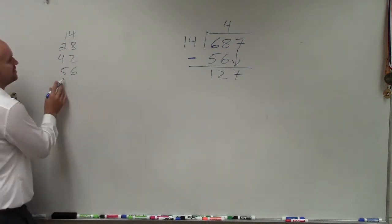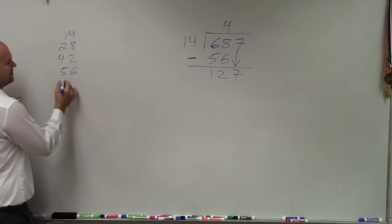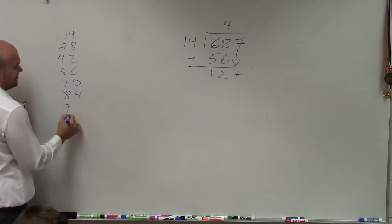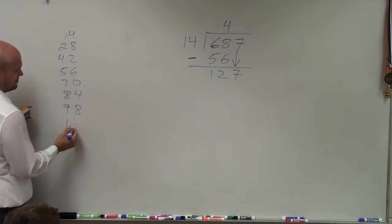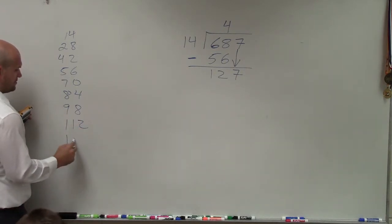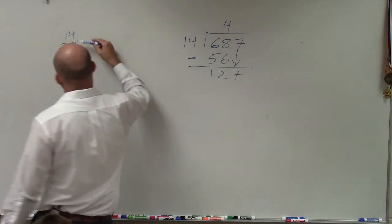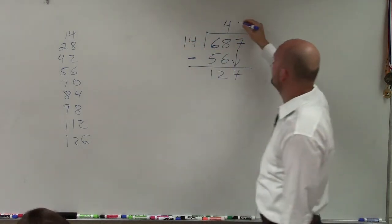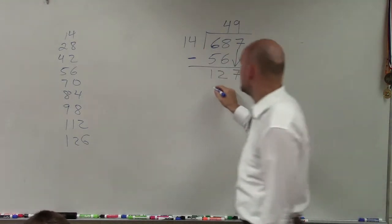You can keep on continuing to add on to this. So that would be 70, 84, 98, 112, 126. So that would be 1, 2, 3, 4, 5, 6, 7, 8, 9. So 14 goes into 127, 9 times. 9 times 14 is 126.